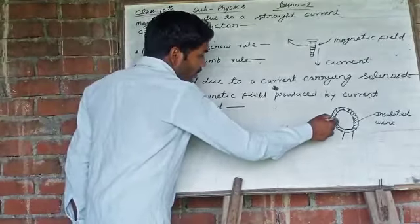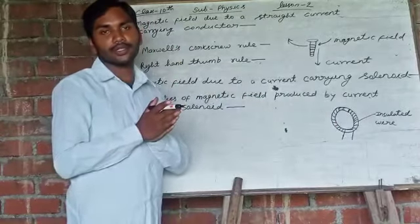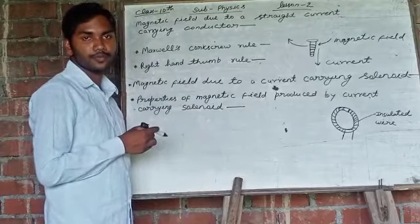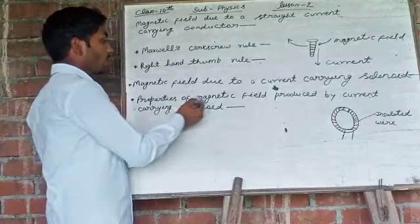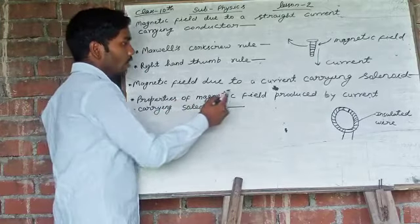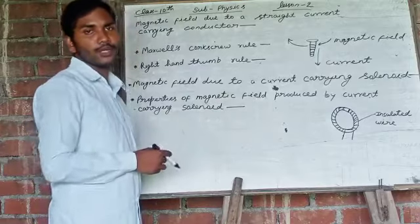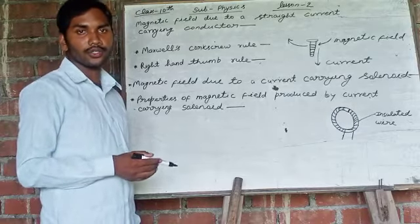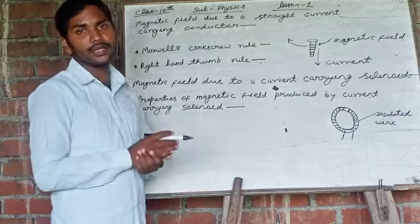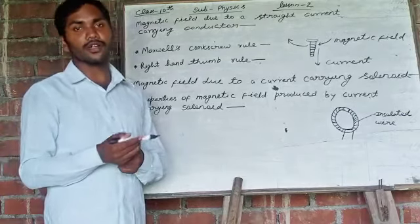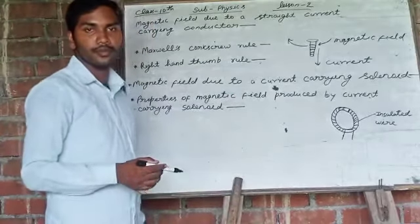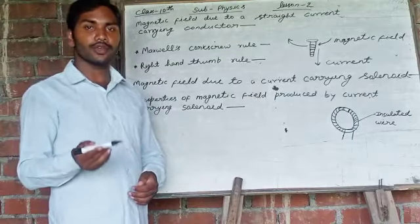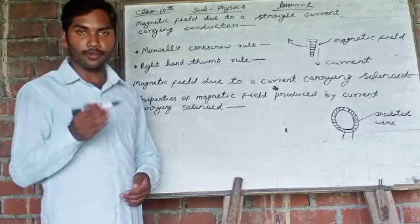If we create this device, it will behave like a bar magnet, meaning it resembles the magnetic field of a bar magnet. Now, the first property of the magnetic field produced by a current carrying solenoid is that it depends on the number of turns of insulated wires. When the number of turns is more, the magnetic field will be strong, and when the number of turns is less, the magnetic field will be weak.